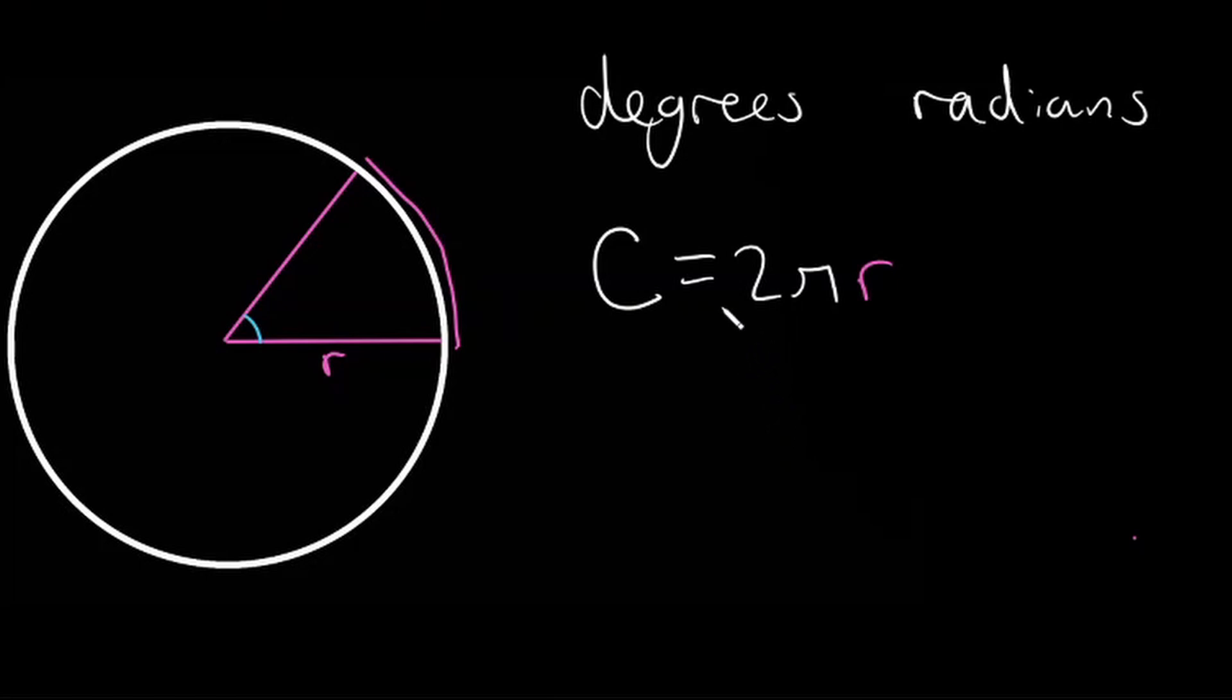So if we know that 2 pi r is equal to the length around the entire circle, and the length of the radius would be 1 radian, then we can just divide by r here to get the number of radians in a circle. So we just cancel that out, the number of radians in a circle is 2 pi. So there's 2 pi radians in one circle.